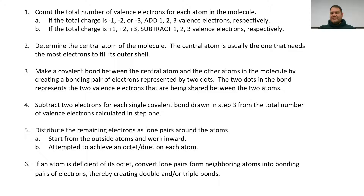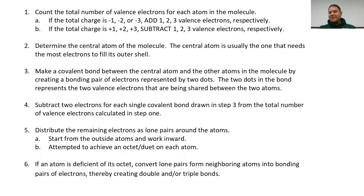Once you have the total, remember: to do a solid Lewis structure, the total number of valence electrons needs to be an even number. If you get an odd number, you cannot draw the Lewis structure. This is another reason not to skip Step 1 — if the total is odd, you'll know right away that you can't draw the Lewis structure for that molecule.